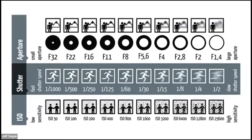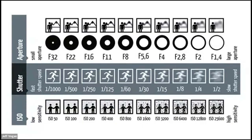I always found it counterintuitive that the bigger the number, the smaller the hole — I would have thought the bigger the hole, the bigger the number, but it's the opposite. With shutter speed, at 1/1000 the image is nice and sharp, but at a half second a person running by is basically a blur. ISO is the sensitivity of your phone or sensor — the bigger the ISO number, the more noise or grain you'll get.